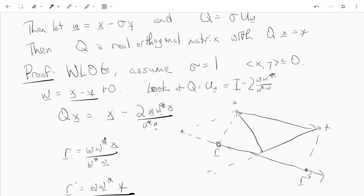And so here's Q times x. It's just the vector x minus two times the projection of x onto w. And we want to check that this equals y.